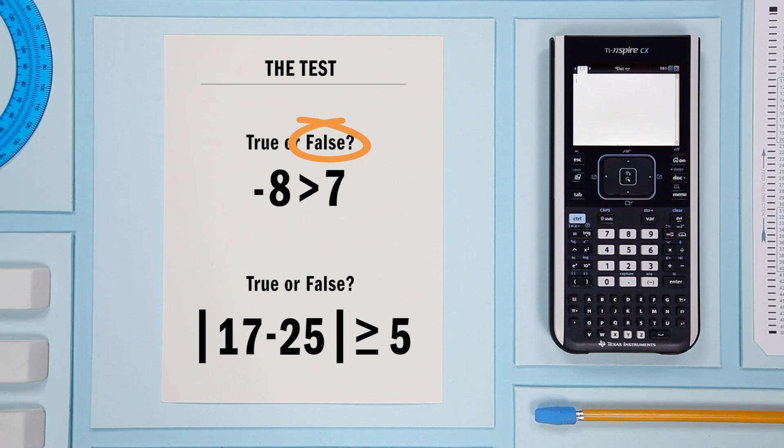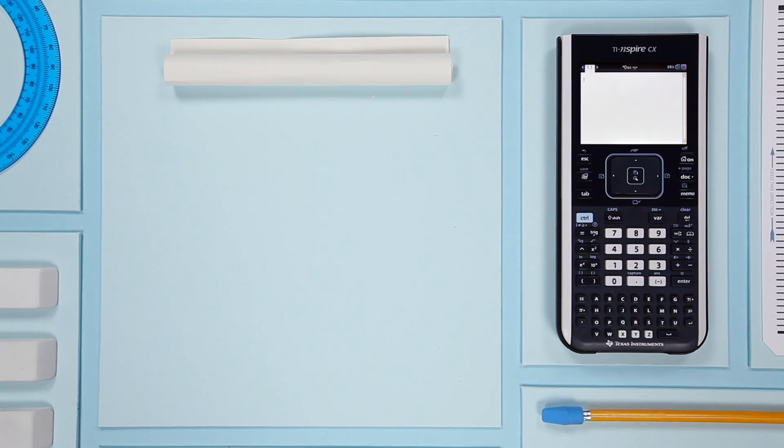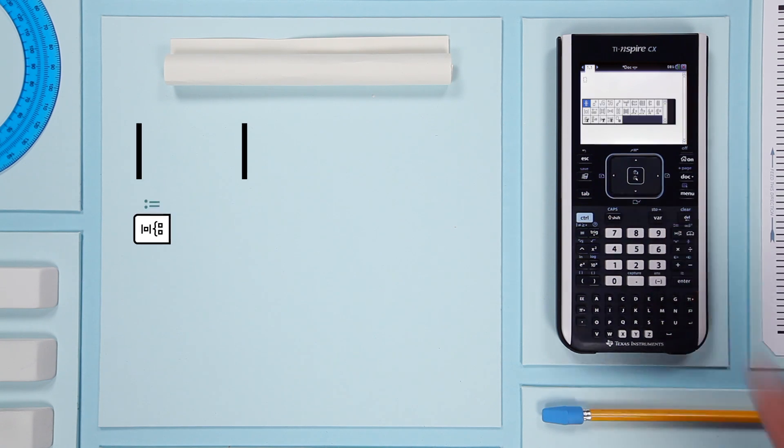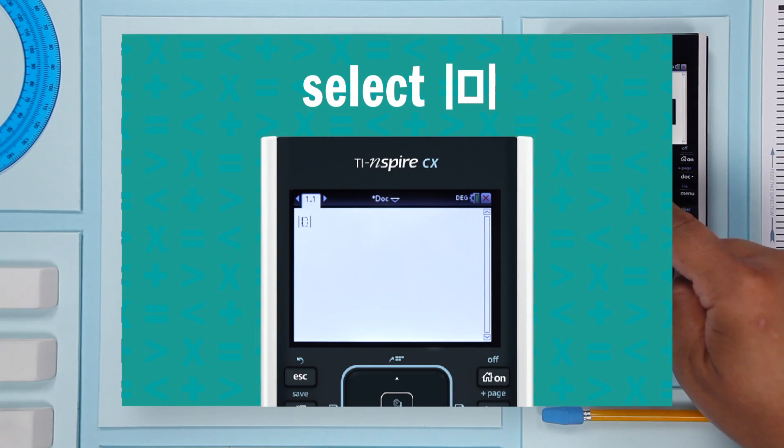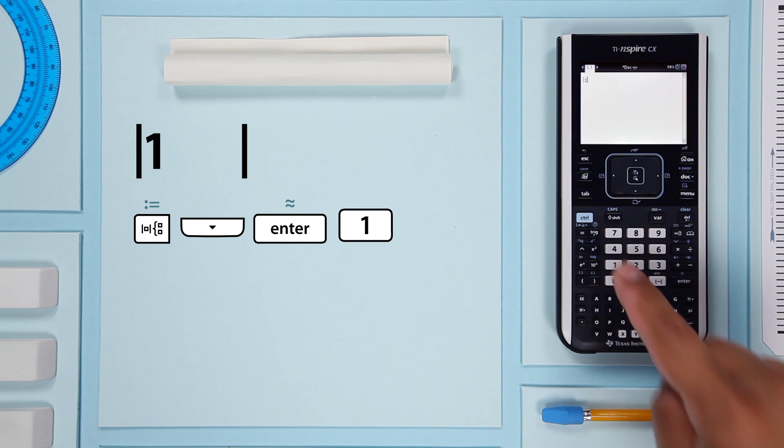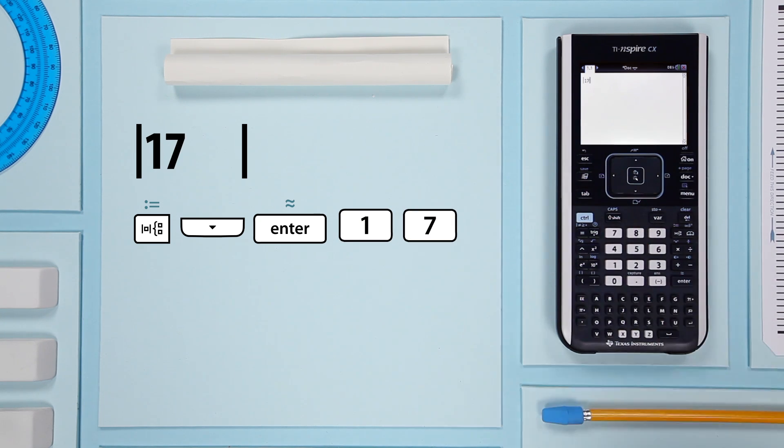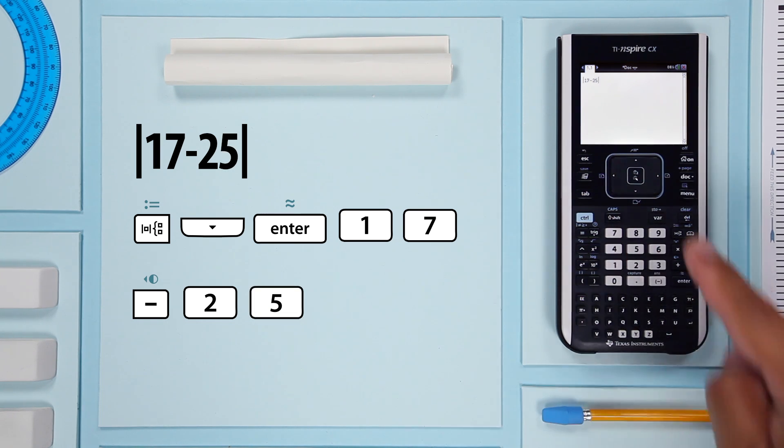One more time. This one is a little more involved. Is the absolute value of 17 minus 25 greater than or equal to 5? This time, start by pressing the math template key and select absolute value. Plug in 17 minus 25, then right arrow,